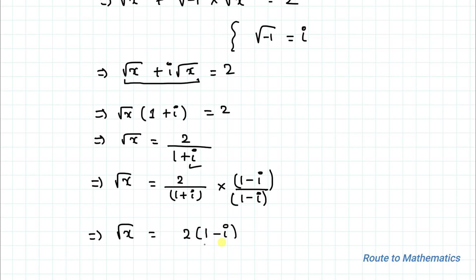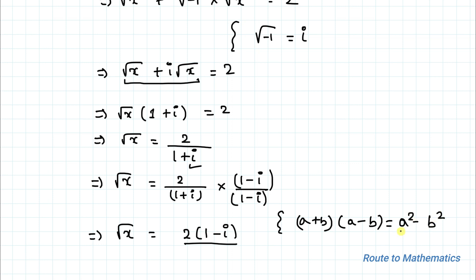This implies root x equals 2 times (1 minus iota) divided by — we apply the algebraic identity (a plus b)(a minus b) equals a squared minus b squared. Considering a as 1 and b as iota, the denominator becomes 1 minus iota squared.